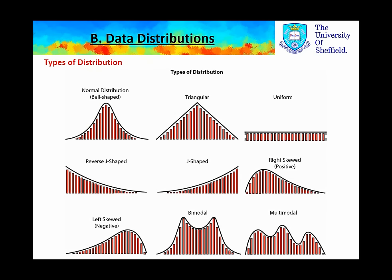We also learned about types of distribution. The important ones to note are the normal distribution in the top left, the uniform distribution in the top right, the skewed distributions — whether it be right skewed (a positive skew) or left skewed (a negative skew) — and the modal distributions on the right-hand side, be it bimodal or multimodal.